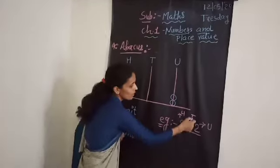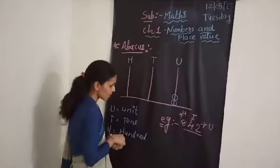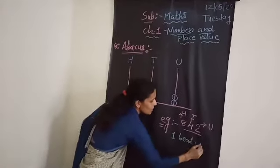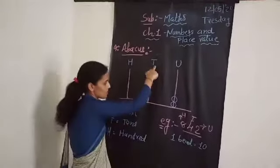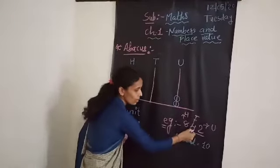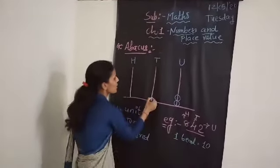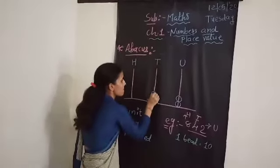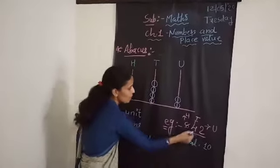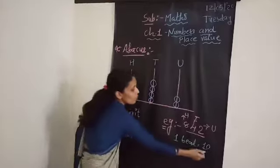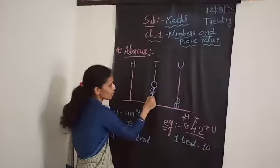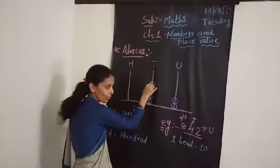Now here is 4 in the Tens place. I will tell you that in the Tens column, if I draw one bead, it means that it represents ten. Here Tens is 4, that means 40. So I draw here 4 beads. Why? Because it's 40. One bead is equal to 10. So: 10, 10+10=20, 20+10=30, 30+10=40.